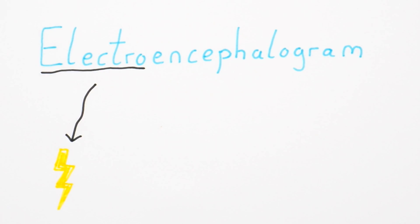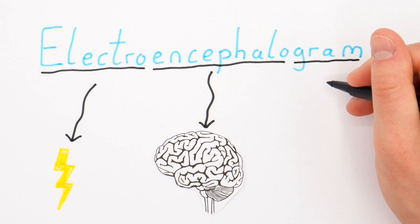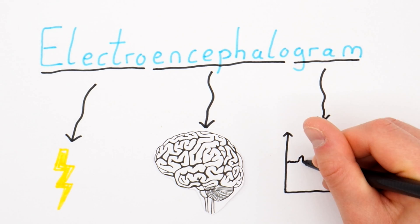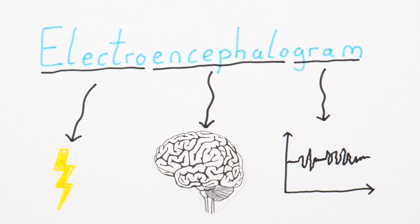Electro refers to electricity, encephalo refers to the brain, and gram refers to something written. So an electroencephalogram just refers to something that measures electricity in the brain and records it. EEG can be recorded from electrodes outside the skull, non-invasively, or from electrodes being placed inside the brain by a neurosurgeon, highly invasively.